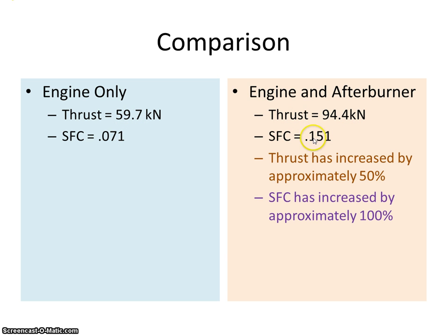That's what it is now with the afterburner. And we can see, increasing roughly 60,000 to roughly 90,000 is approximately a 50% increase in thrust. And the fuel has gone from 0.071 up to 0.151. So we can say that the specific fuel consumption has doubled or increased by 100%.